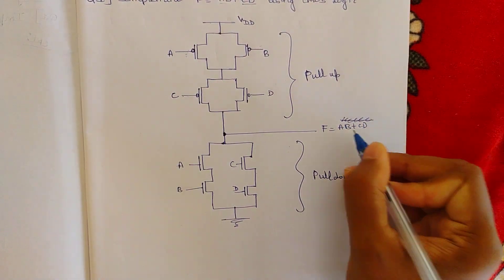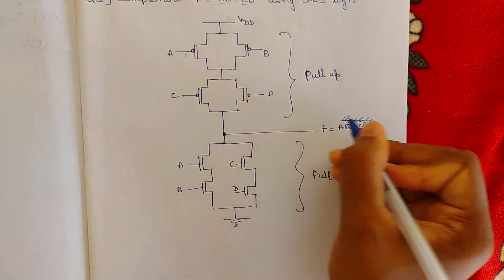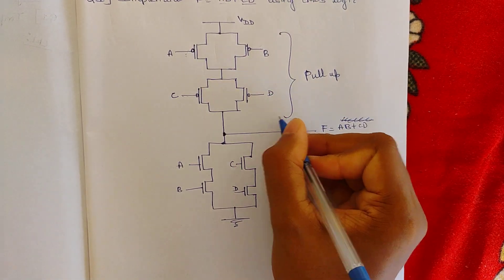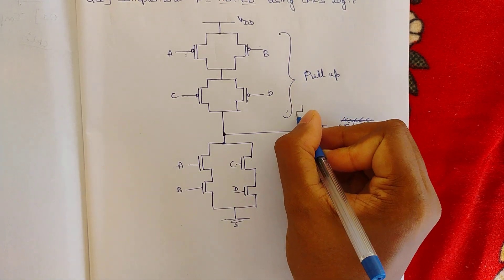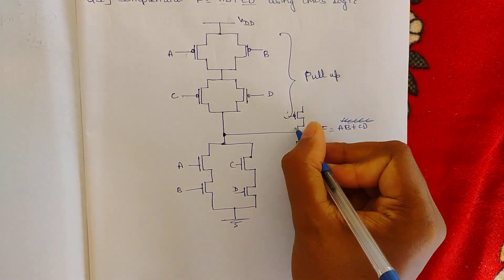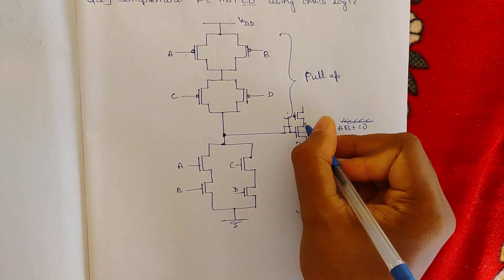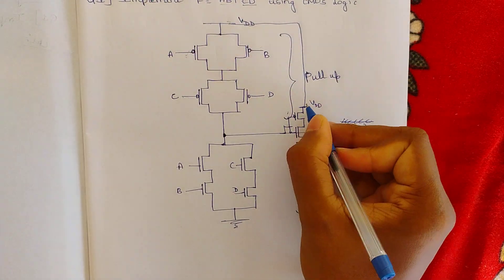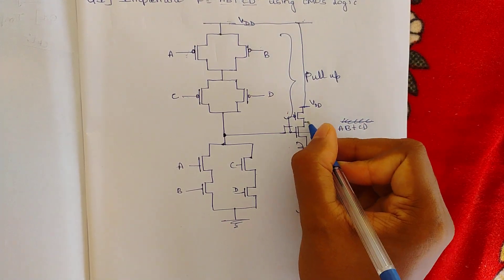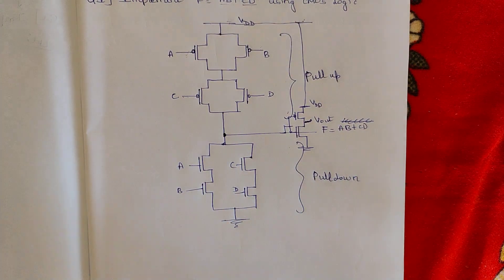Sometimes they won't give you the whole complement — they'll give you only AB + CD without the bar. In that case you must draw an inverter at the output. An inverter is one PMOS and one NMOS circuit. From the output node, draw one PMOS and one NMOS, connect their gates together, connect VDD to PMOS source and ground to NMOS source, and the output is checked from the common drain. That's how you draw it when no complement is given.